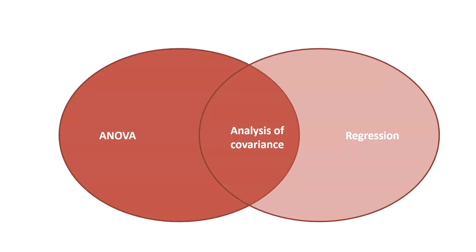Analysis of covariance takes what ANOVA has and also what regression has. We can think of analysis of covariance as a general linear model, which blends together what we know about ANOVA and what we know about regression.